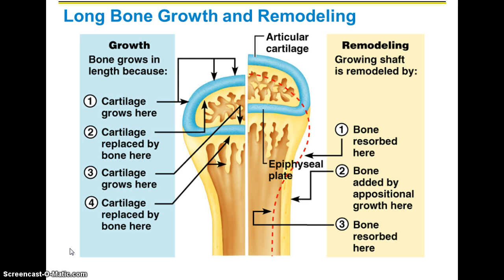Bone deposition is another important process. When bones are injured or need extra strength, you need bone deposition, which requires vitamins A, C, and D, lots of proteins, phosphorus, magnesium, different minerals, calcium, and manganese in order to mineralize the bone and make it sturdy. Bone deposition and remodeling work together almost as a homeostatic mechanism.